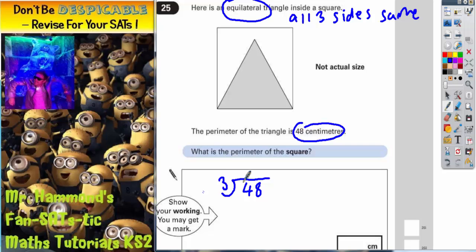48 divided by 3. 3 into 4 is 1 with 1 left over, and that now makes 18. 3 into 18 goes 6, so 3 into 48 is 16 centimeters. So if this whole triangle has a 48 perimeter, each one of the sides which are equal must be 16.